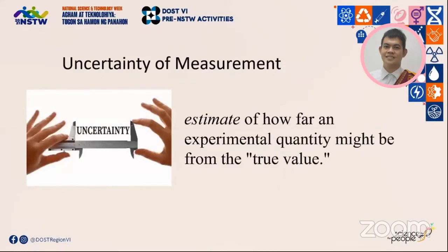Ultimately, all measurements are used to help make decisions, and poor quality measurements result in poor quality decisions. The uncertainty in a measurement is a numerical estimate of the spread of values that could reasonably be attributed to the quantity's true value. It is a measure of the quality of a measurement and provides a means to assess and minimize the risk and possible consequences of poor decisions. The uncertainty reported on your certificate is information necessary for you to calculate the uncertainty in your measurements.